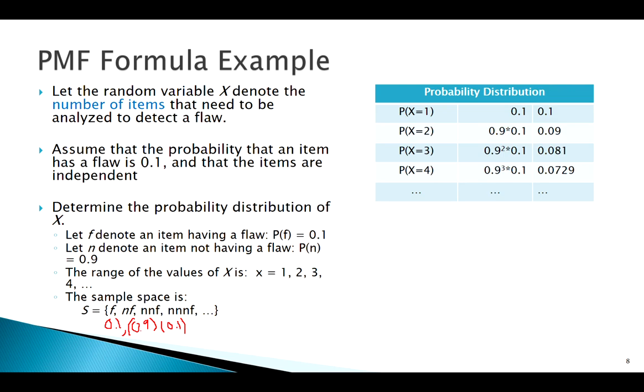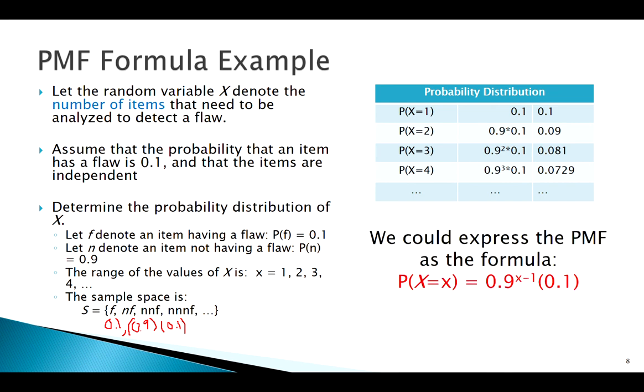We could define our formula like this: 0.9 (which was our probability of not having a flaw) times x minus 1, because I would have to pull that many items before my xth item actually does have a flaw, that's 0.1.